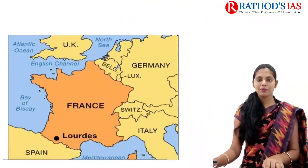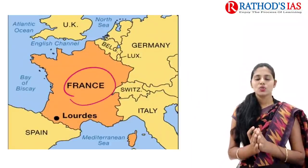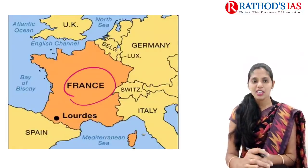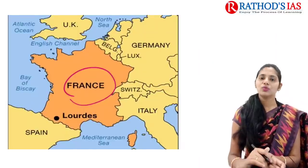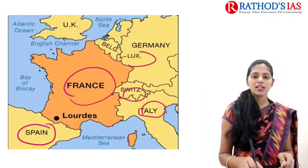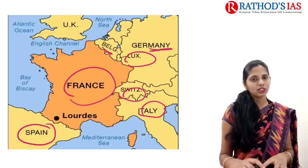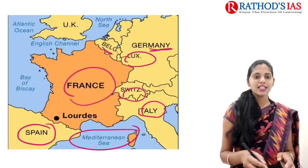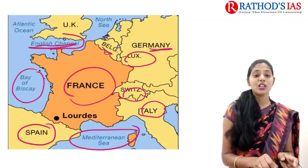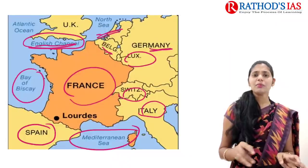Now let us see the map. Here we have France. Whenever any country appears in the news, you have to open the atlas and see which countries share its boundary — this gives you an idea regarding the world map. Countries sharing boundary with France include Spain, Italy, Switzerland, Luxembourg, Germany, and Belgium. Nearby water bodies include the Mediterranean Sea, the Bay of Biscay, the English Channel, and the North Sea.